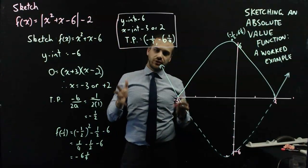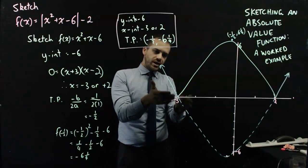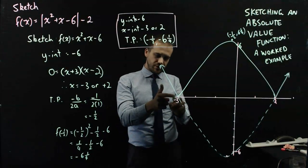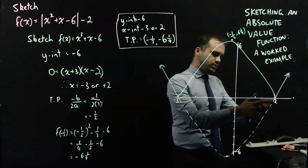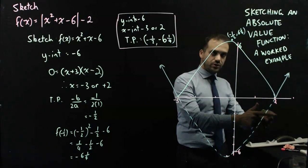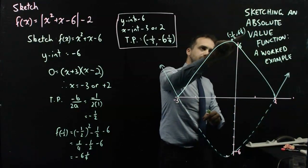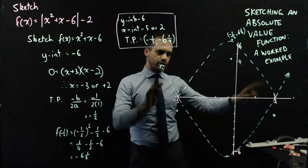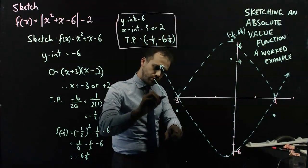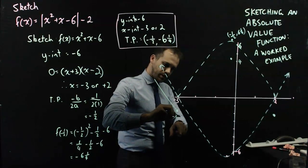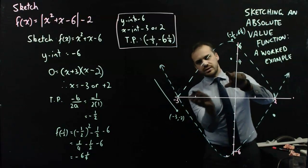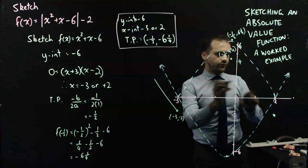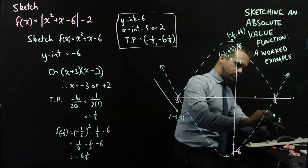But now I have a vertical shift of negative 2. That negative 2 is going to shift everything down by 2 units. So the point (negative 3, 0) becomes (negative 3, negative 2); the point (2, 0) becomes (2, negative 2); the y-intercept of 6 becomes 4; and the turning point value of 6 and a quarter becomes 4 and a quarter. I'm going to draw the new curve down to (negative 3, negative 2), following through to the new turning point at negative one half, 4 and a quarter, through 4, and down to the point (2, negative 2).